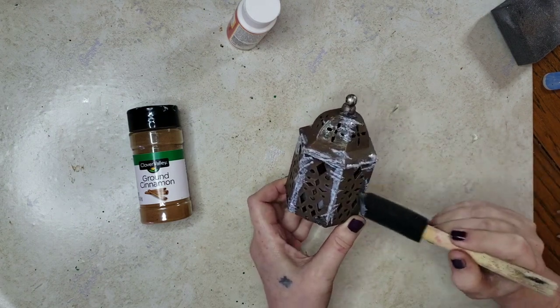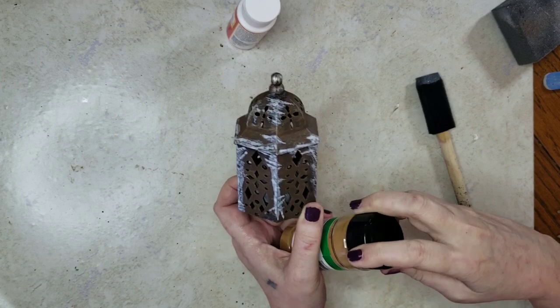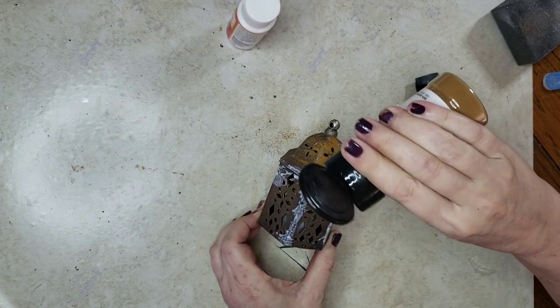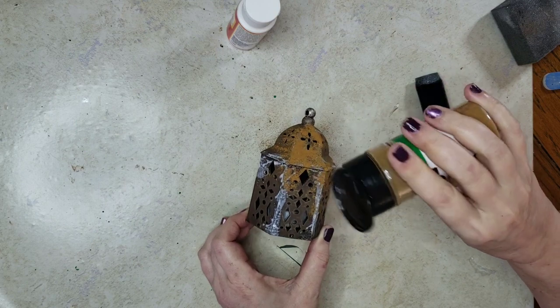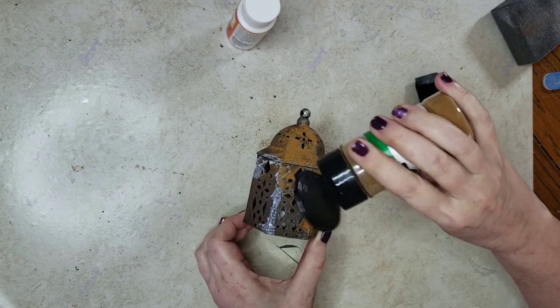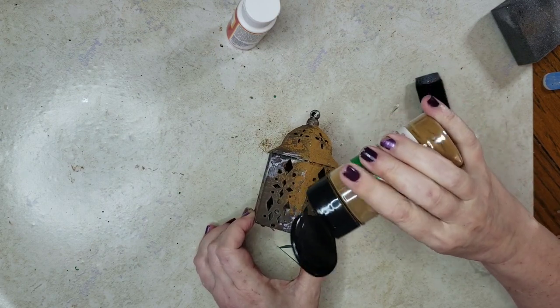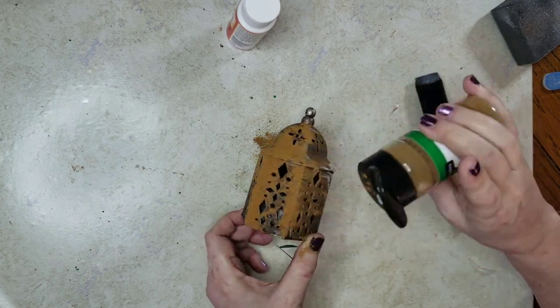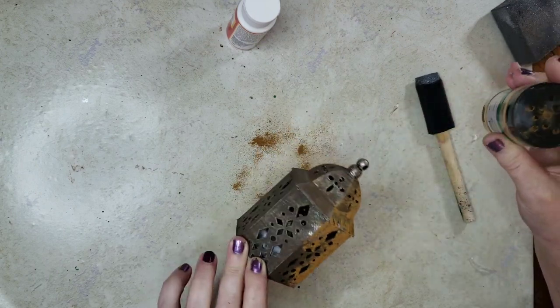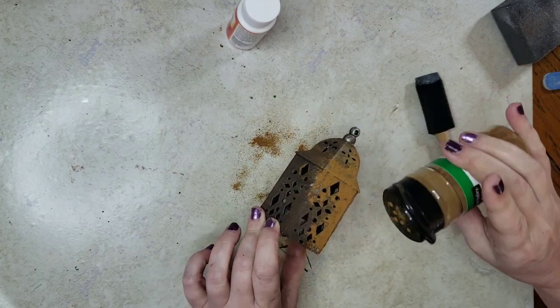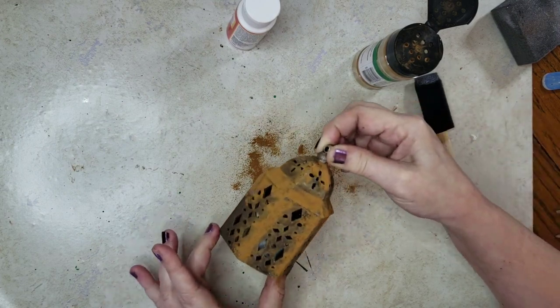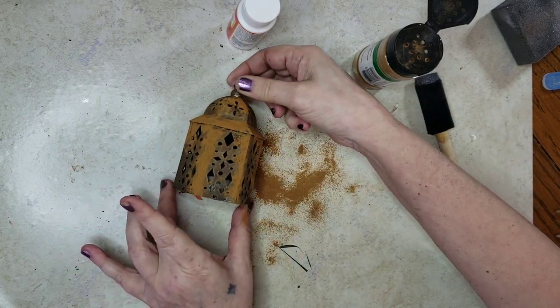Once I had the Mod Podge dabbed on, I grabbed the cinnamon and shook it all over. It's kind of like a glittering technique and just like glitter it makes a mess. I should have put something down under it but I did not. Once I've got all the Mod Podge covered, I tap tap tap, shake off the excess.